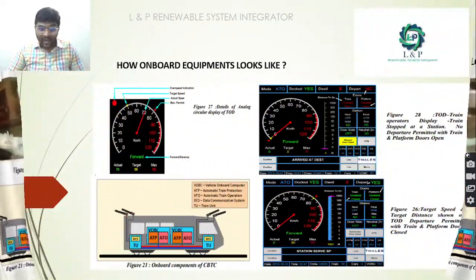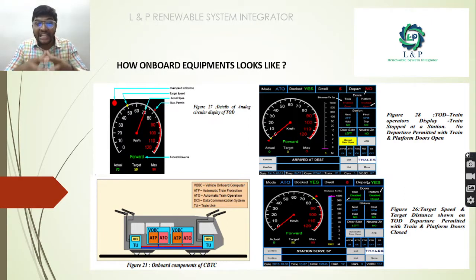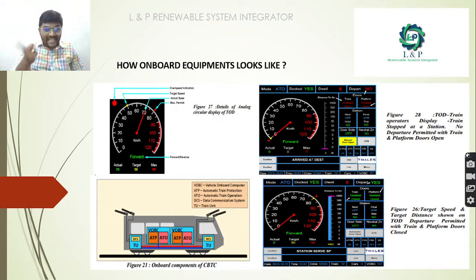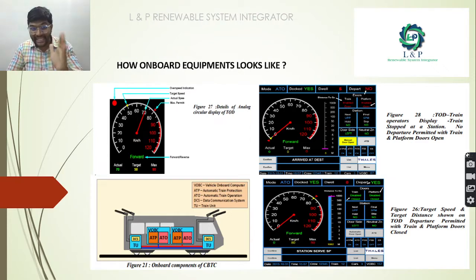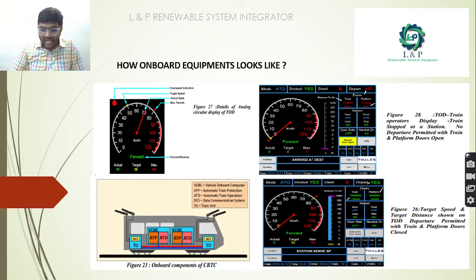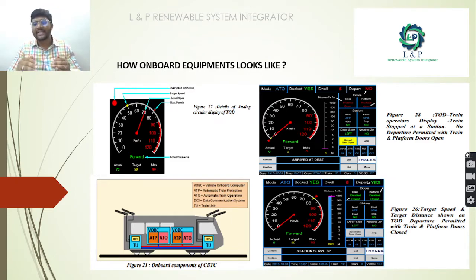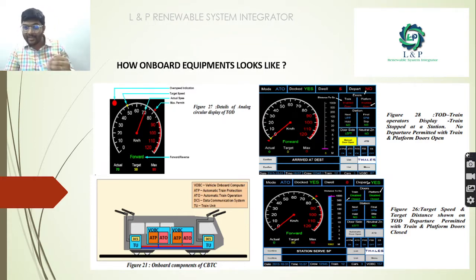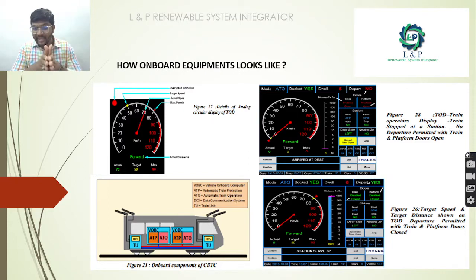Apart from the on-board equipment, there is a train operator display (TOD). It shows the target speed, actual speed, and overspeed indications. The display changes depending on train state: when arriving at a destination, when the train is at a stop, and when the train is departing — for example, indicating that doors are closed.